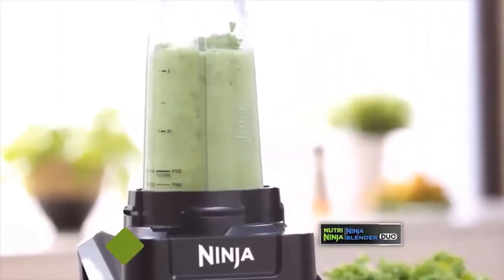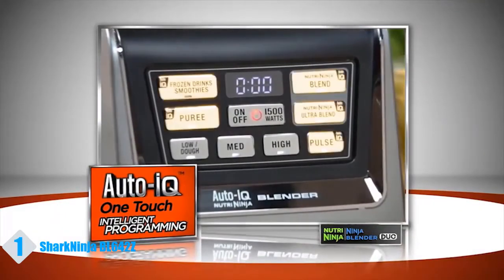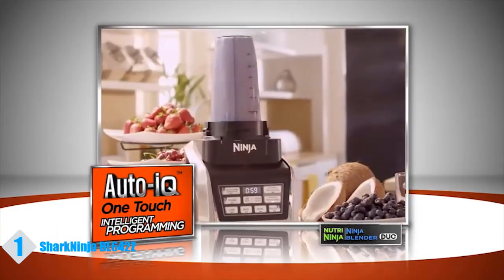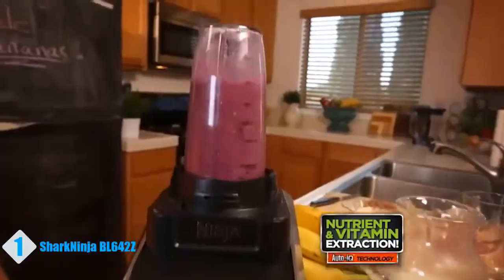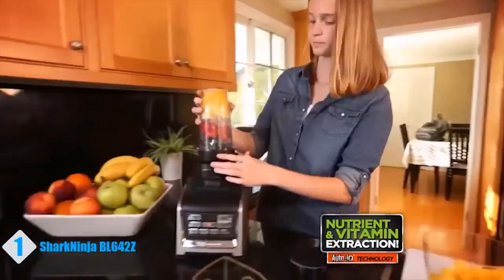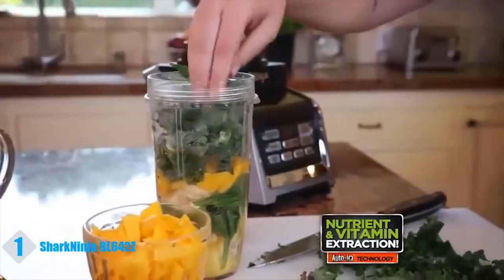Want to see something truly amazing? Your Nutri Ninja also comes with the power and intelligence of Auto IQ technology. Simply choose one of five Auto IQ programs, then push one button. Auto IQ does the rest. Combined with our Pro Extractor Blades, you will be able to break down whole fruits, vegetables, ice, and seeds for nutrient and vitamin extraction.